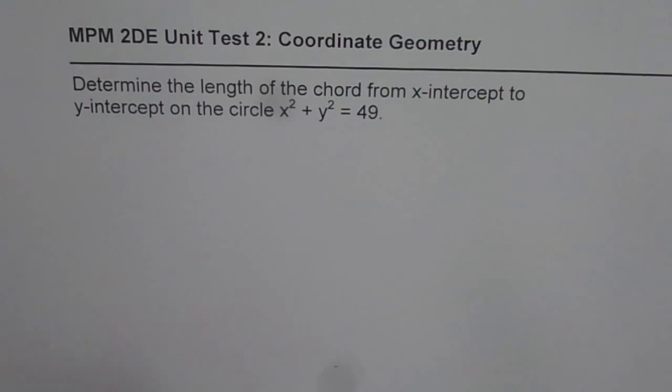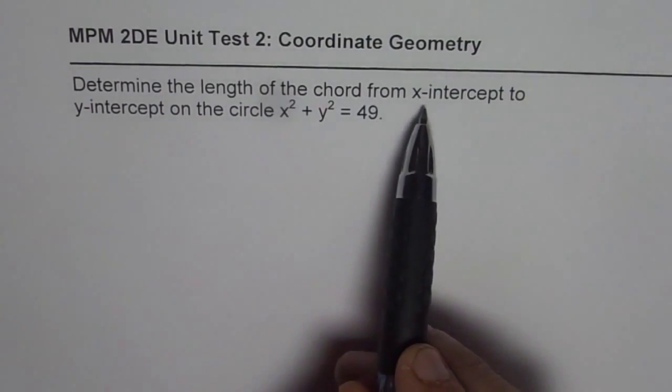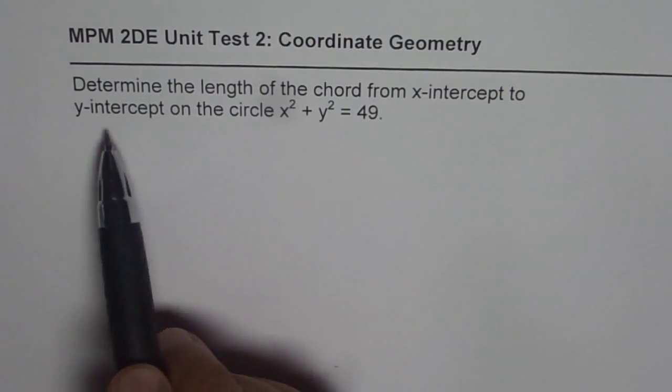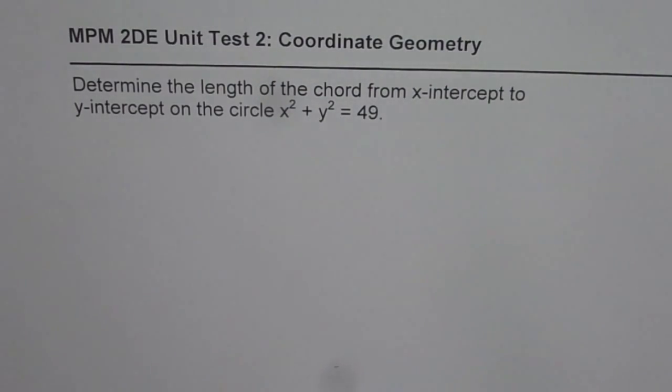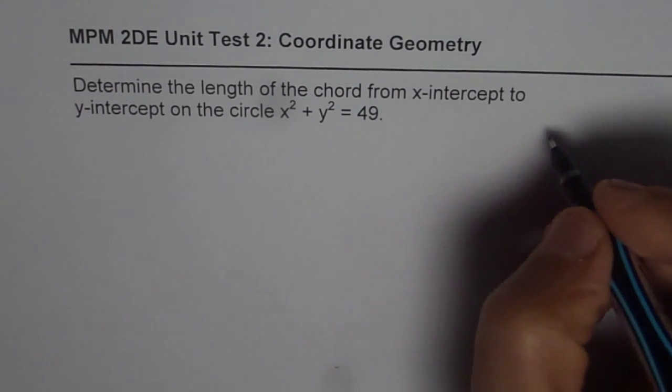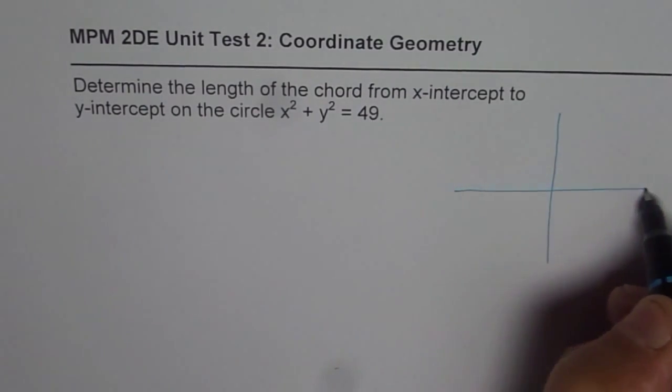The question is determine the length of the chord from x-intercept to y-intercept on the circle x² + y² = 49. That is a very interesting way of finding length of the chord. It is kind of an application interesting question. Therefore, I decided to share it with you.